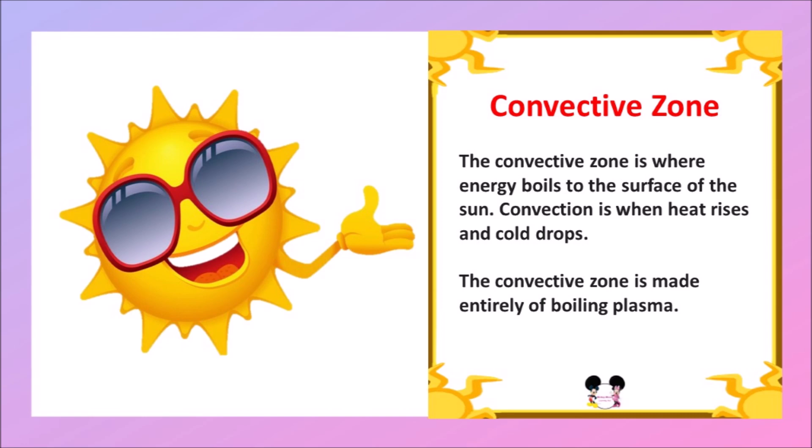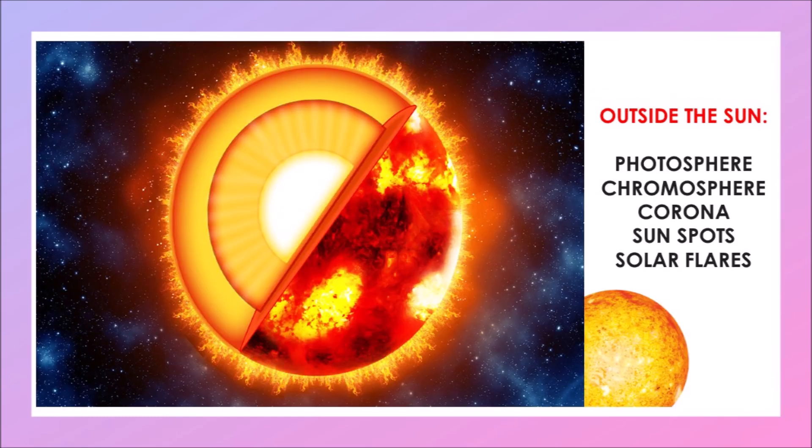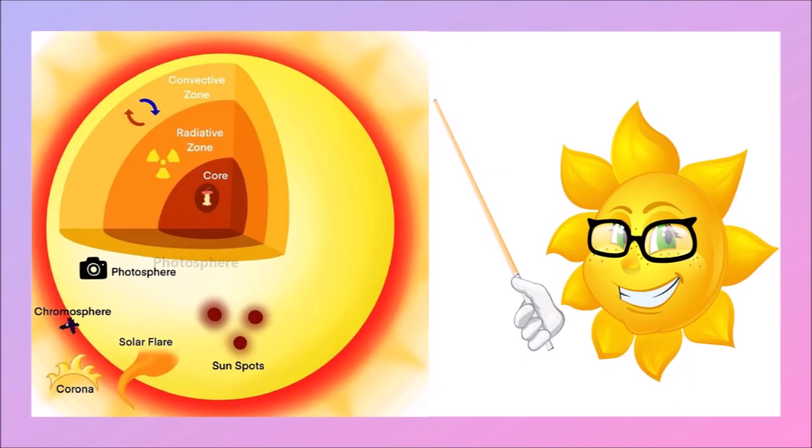Let's discuss about the outer layer of the Sun. There are five outer layers in the Sun: photosphere, chromosphere, corona, sunspot, and solar flare. The first one is photosphere. The surface of the Sun is called photosphere.